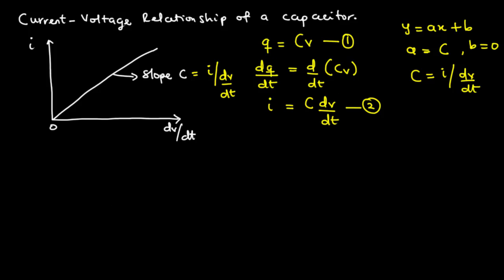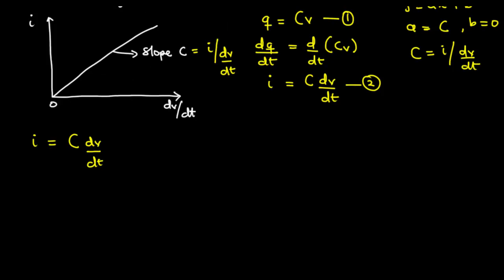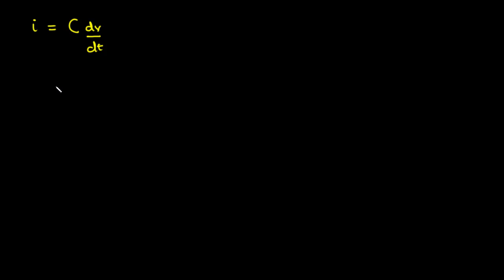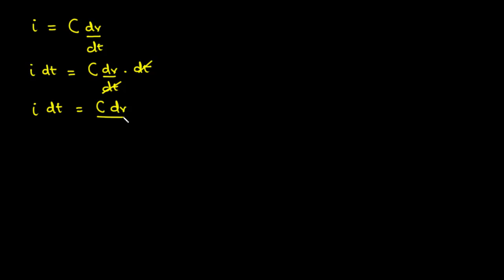Moving on, we can also express the current-voltage relationship of a capacitor in terms of voltage. Starting from equation two, i = C(dV/dt), we multiply both sides by dt to get i·dt = C·dV. Dividing both sides by C gives dV = (1/C)·i·dt. Since 1/C is a constant, we rewrite it as (1/C)·i·dt and then integrate both sides.